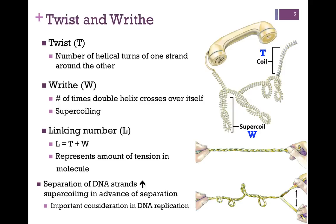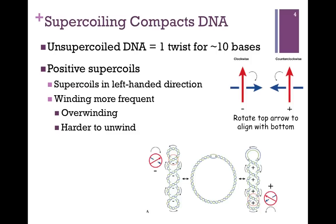We need to be able to either introduce supercoiling or relax it as the case may be. Just as unsupercoiled DNA has one strand wrapping around the other — one twist for about ten bases — in a right- or left-handed direction, we can also supercoil in one direction or another. Positive supercoils are in the left-handed direction; the winding is more frequent, so the DNA is overwound, making it harder to separate the two strands.